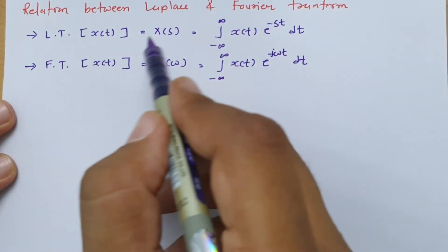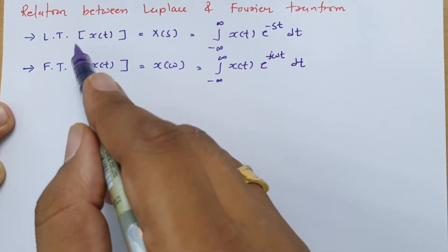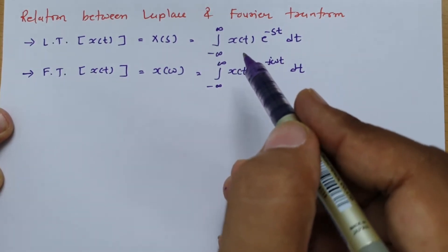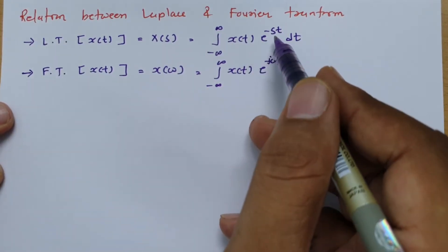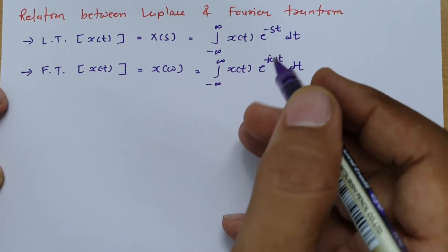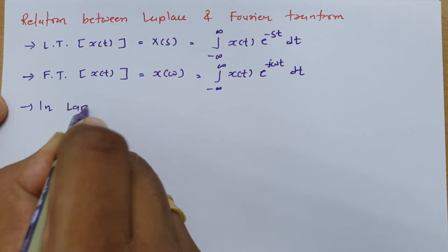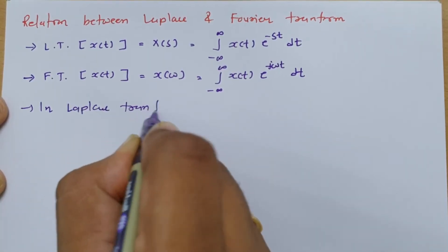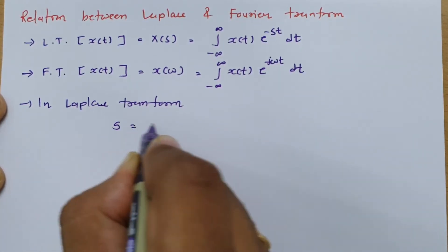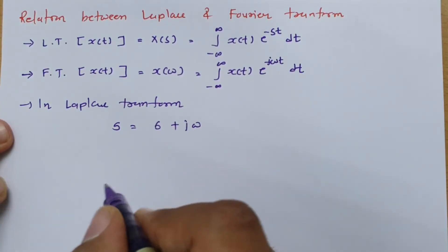Now, to find the relation between the Laplace transform and the Fourier transform, I will start from the Laplace transform equation. As explained in the previous session, in the Laplace transform we represent the signal in the s-domain, and s is a combination of real and imaginary parts — that is, s equals σ plus jω.